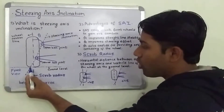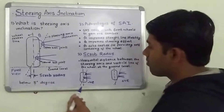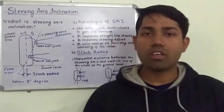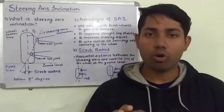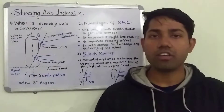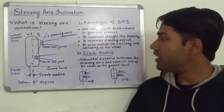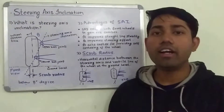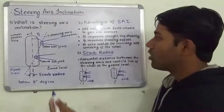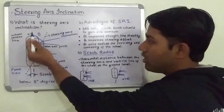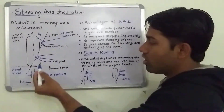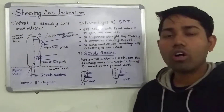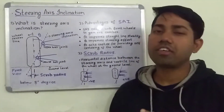So it is measured at ground level. There are two types of scrub radius: positive scrub radius and negative scrub radius. It depends upon where the steering axis and the wheel center line intersect. When these two lines intersect at the ground level, it is called zero scrub radius.